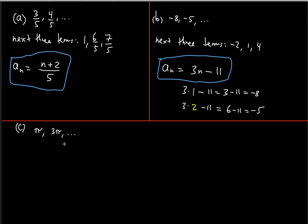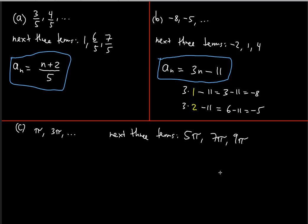For the last example, the common difference is two pi: three pi minus pi is two pi. So the next three terms are five pi, seven pi, and nine pi — each found by adding two pi to the previous term.